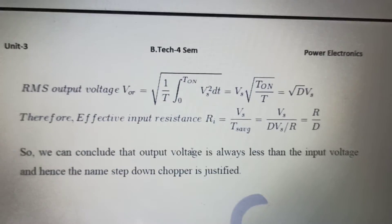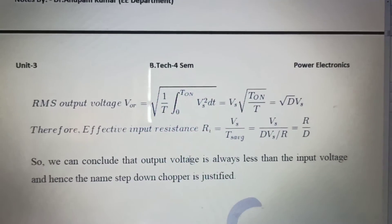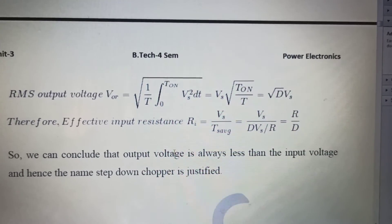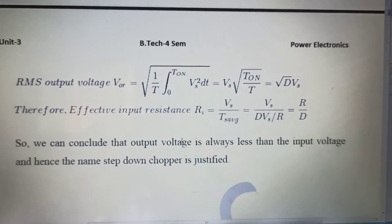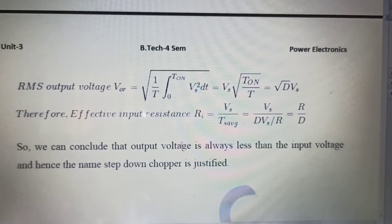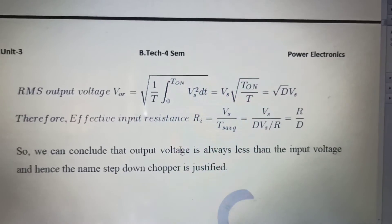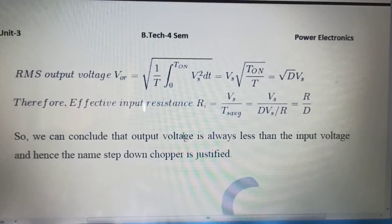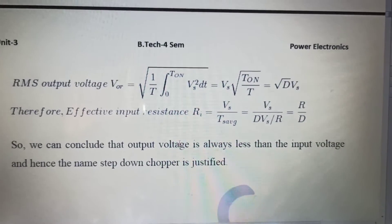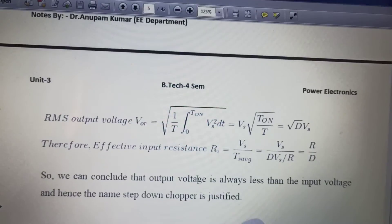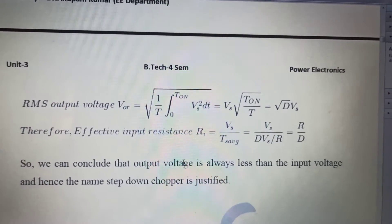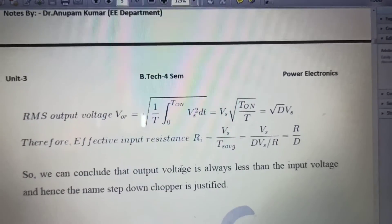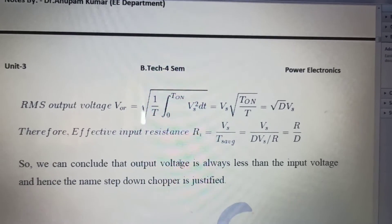Now if you move further, we can also calculate the RMS output voltage for the concerned waveform. As we all are well versed that the RMS value will exist for only 0 to T_on time period. So the equation comes out to be Vs for the time period T_on. We will put T_on equals to D*T. And when we will put D*T then obviously D*T will cancel out and we are left with square root of D into Vs.